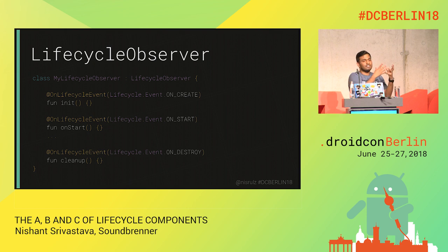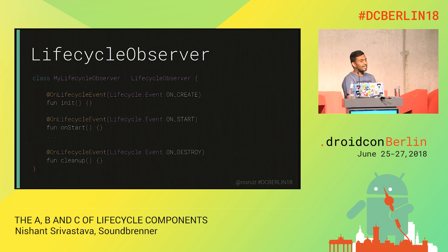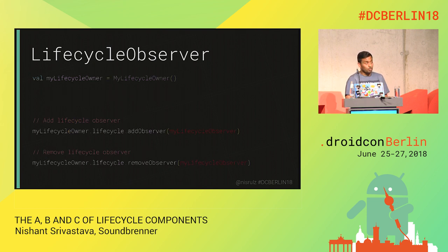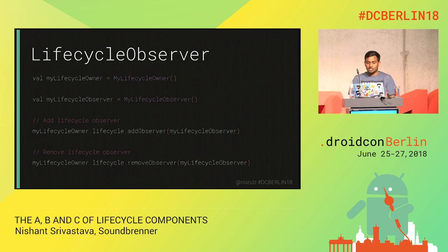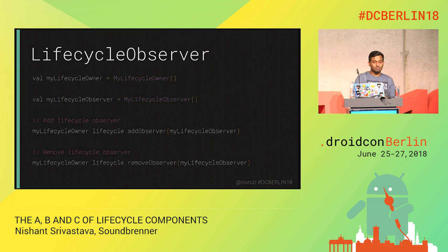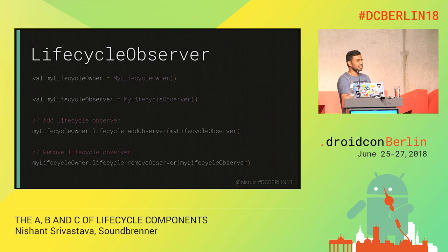The way you use annotations is by annotating your methods with the right kind of lifecycle event you want them triggered at. For example, when the lifecycle goes through the onCreate event, that's when I want to trigger my init method. So automatically, when my lifecycle owner's lifecycle goes through onCreate, the init method gets called. The same goes for onStart and cleanup — they are called at the right time and event in the lifecycle.